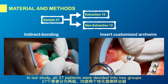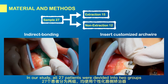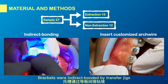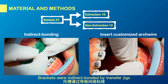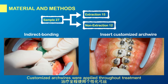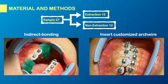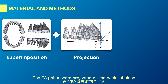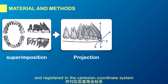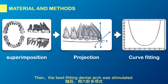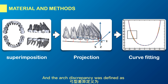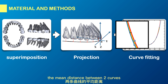In our study, all 27 patients were divided into two groups and treated with a fully customized labial orthodontic appliance. Brackets were indirectly bonded by transfer jigs, and customized arch wires were applied throughout treatment. After the end of treatment, we superimposed the setup and post-treatment digital models. The facial axis points were projected on the occlusal plane and registered in a Cartesian coordinate system. Then the best-fitting dental arch was simulated by a six-order polynomial equation, and arch discrepancy was defined as the mean distance between the two curves.